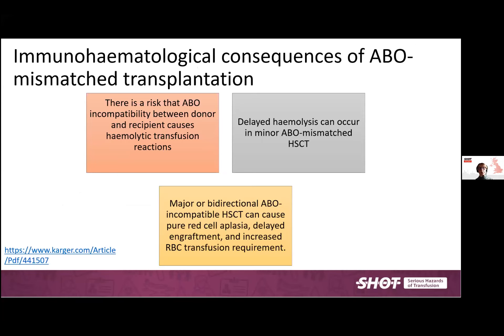ABO incompatibility between donor and recipient can cause hemolytic transfusion reactions. Delayed hemolysis can occur in minor ABO mismatched transplants due to hemolysis of remaining recipient red cells by antibodies produced by donor B lymphocytes. Major or bi-directional ABO incompatible transplants can cause pure red cell aplasia, delayed engraftment, and increased red cell transfusion requirement. The risk is higher if a group O recipient with high titre anti-A receives a group A transplant. There is a good article by Nina Worrell if you want to read more, with the link at the bottom of this slide.